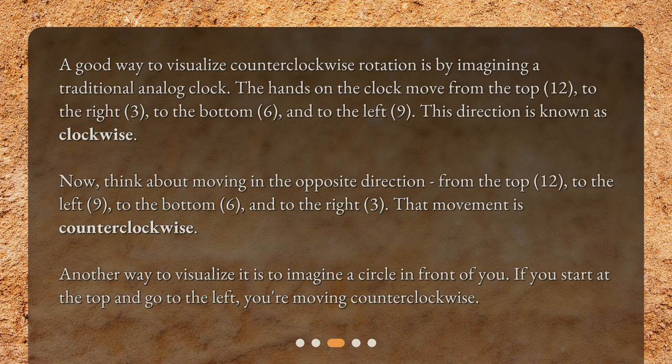Now, think about moving in the opposite direction — from the top (12), to the left (9), to the bottom (6), and to the right (3). That movement is counterclockwise. Another way to visualize it is to imagine a circle in front of you. If you start at the top and go to the left, you're moving counterclockwise.